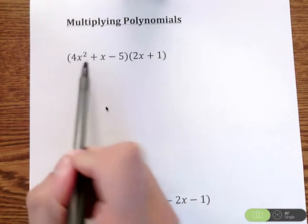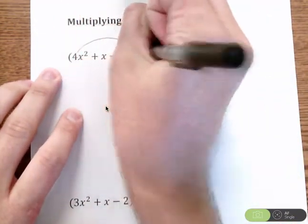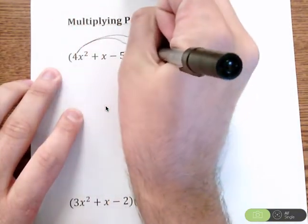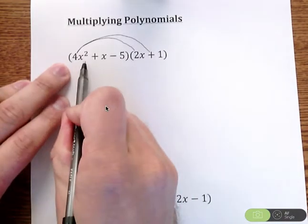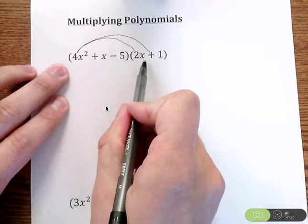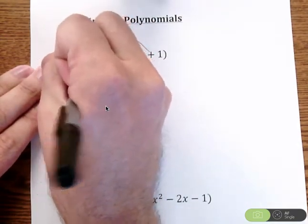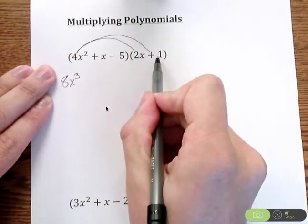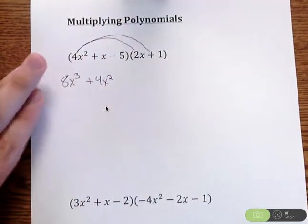I'm going to start with this 4x². We're going to take that and multiply it to both pieces in the back parentheses—to the 2x and to the 1. So 4x² times 2x gives us 8x³. 4x² times positive 1 is just positive 4x².